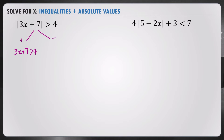Let's solve this part. We have 3x is greater than — subtracting 7 on both sides gives negative 3, then dividing by 3 on both sides, we get x is greater than negative 1. So that's one of your answers.